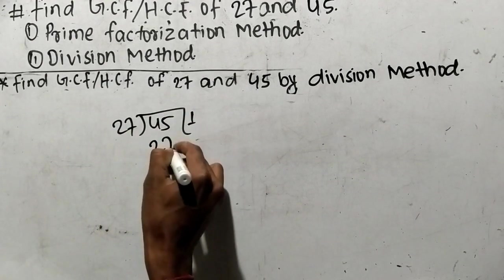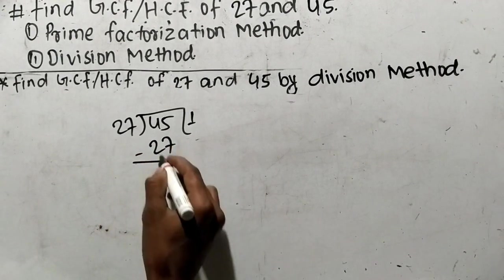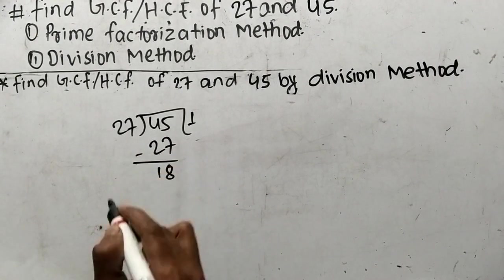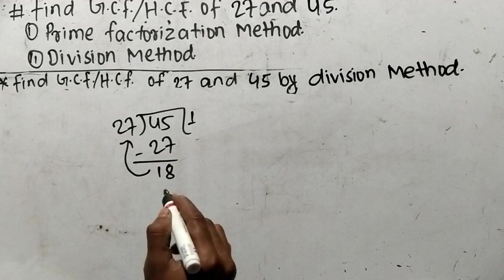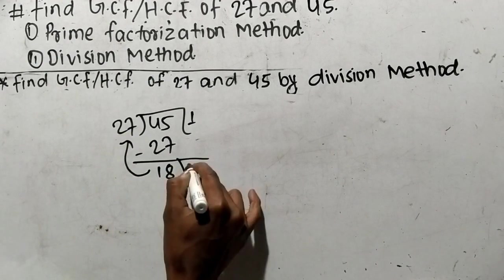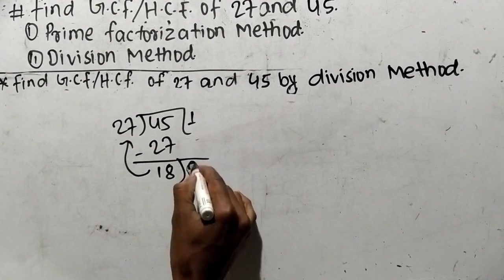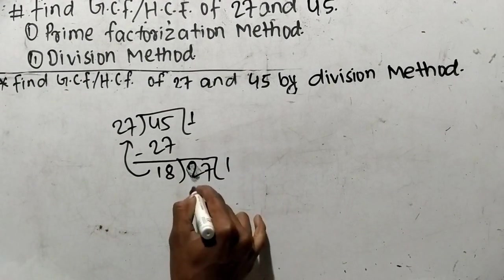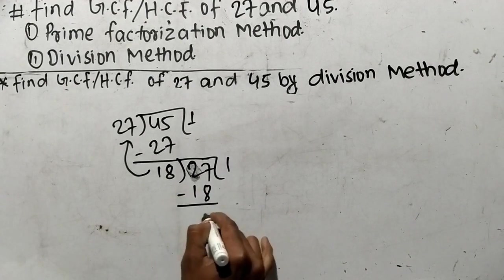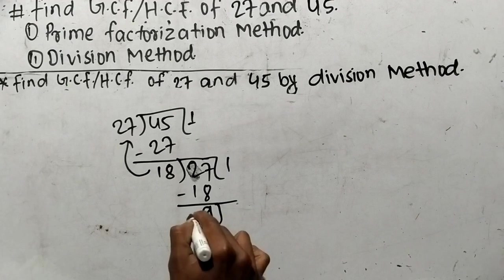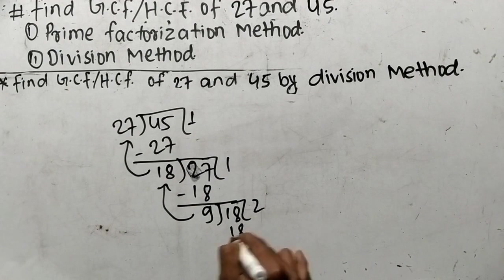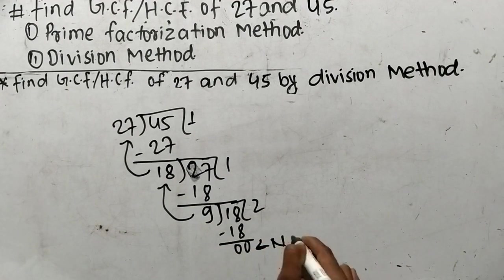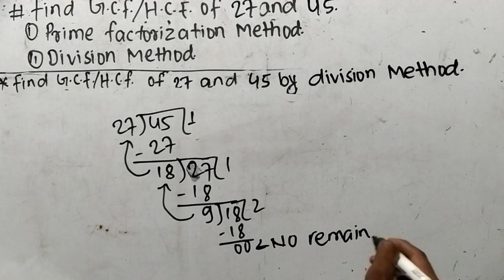So 27 times 1 means 27, and 45 minus 27 means the remainder is 18. Since we get 18 as remainder, we again divide the divisor 27 by 18. Then 18 times 1 means 18, so we get a remainder of 9. We again divide the divisor 18 by 9: 9 times 2 means 18, so here at last we have no remainder. The divisor is 9.